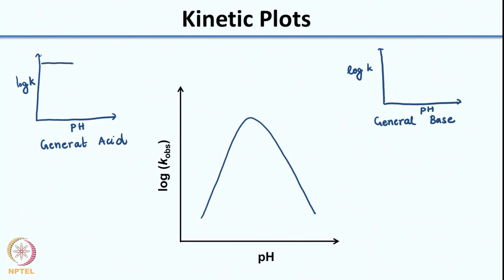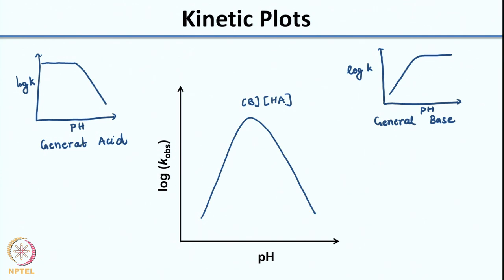For a general acid the plot looks like this, and for a general base the plot looks like this. At low pH you have a lower concentration of B; as you increase pH you increase the concentration of B until you reach maximum rate, which occurs when you have both good concentration of B and HA. As you continue increasing pH, HA dissociates to H+ and A−, so the concentration of HA decreases and the rate drops off again, giving the bell-shaped kinetic plot.